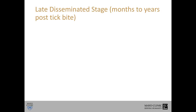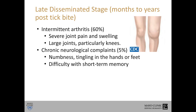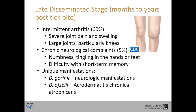If Lyme disease is not treated, it continues to progress to the late disseminated stage, months to years after the tick bite. The most common symptom is intermittent, usually unilateral arthritis causing severe joint pain and swelling of large joints, especially the knees, as shown in this CDC picture. Other complications include neurologic symptoms — numbness, tingling in the hands and feet, difficulty with short-term memory. Some European species have unique manifestations: Borrelia garinii is more likely to cause neurologic disease, while Borrelia afzelii has a unique skin condition called Acrodermatitis chronica atrophicans.